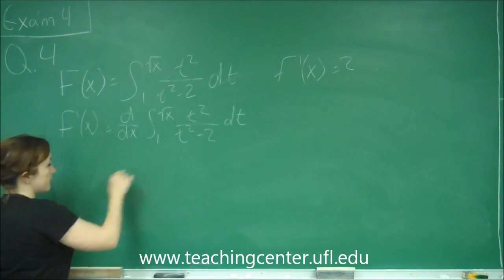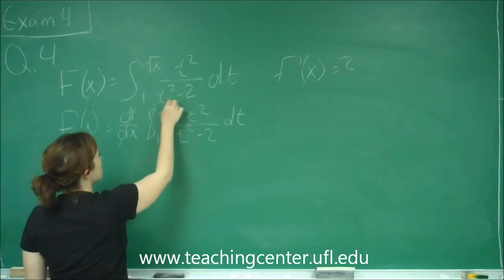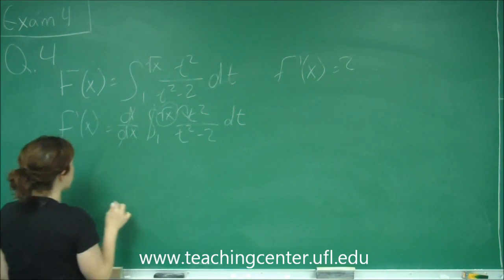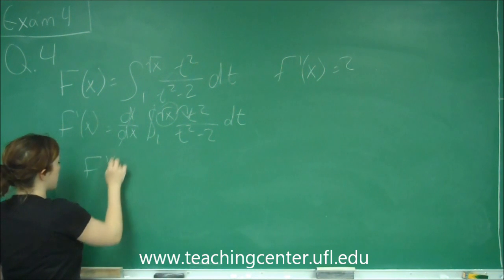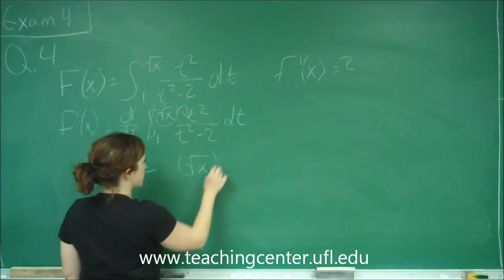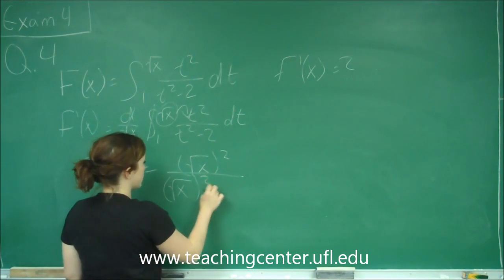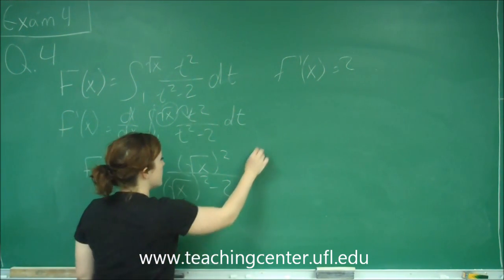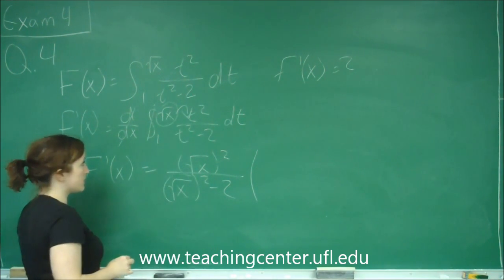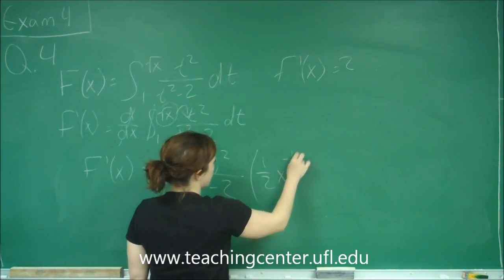When we take the derivative of something, it cancels out our integral. What we do is take that top value with the letter and substitute it for T. So we get F prime of X is equal to the square root of X squared over the square root of X squared minus 2. Then we multiply it by the derivative of what we substituted in, which is going to be 1 half X to the negative 1 half.